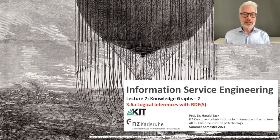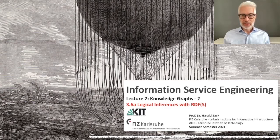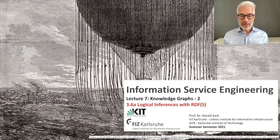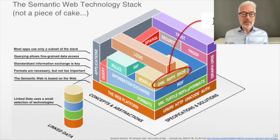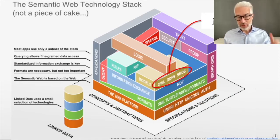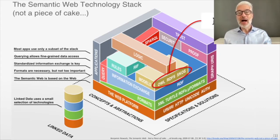Welcome. This is Information Service Engineering, Lecture number 7, Knowledge Graphs part 2. In this section of the lecture we are going to talk about logical inferences that we can draw based on RDF and RDFS. We are still on the RDF schema, on the modeling level within the Semantic Web Technology stack. Right now when we are looking at semantics, we are only considering RDF and RDF schema, not OWL semantics. This comes later in the next lectures.